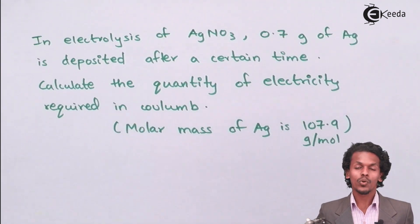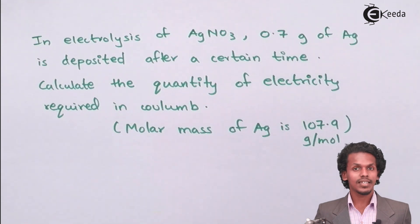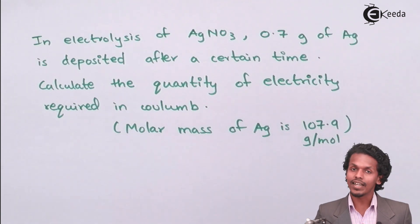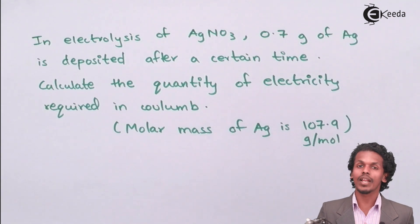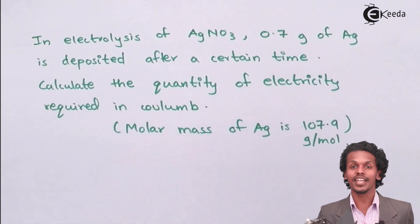Coulomb is the quantity that we will get when current is multiplied by time. That means we have to calculate the value of i into t.